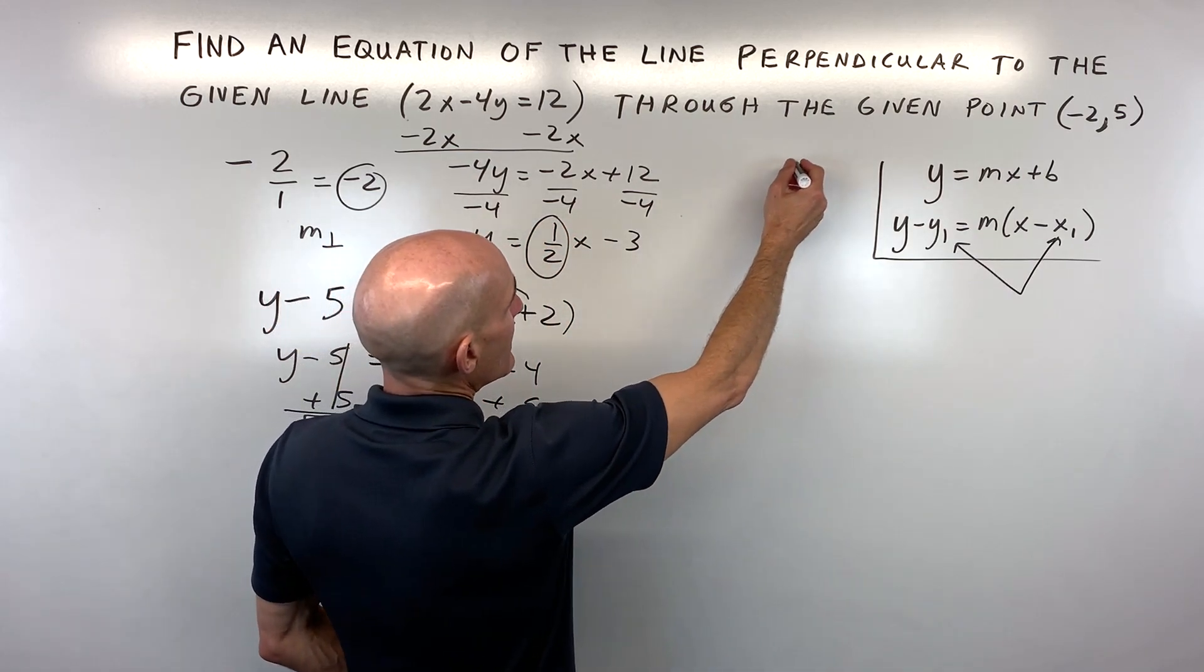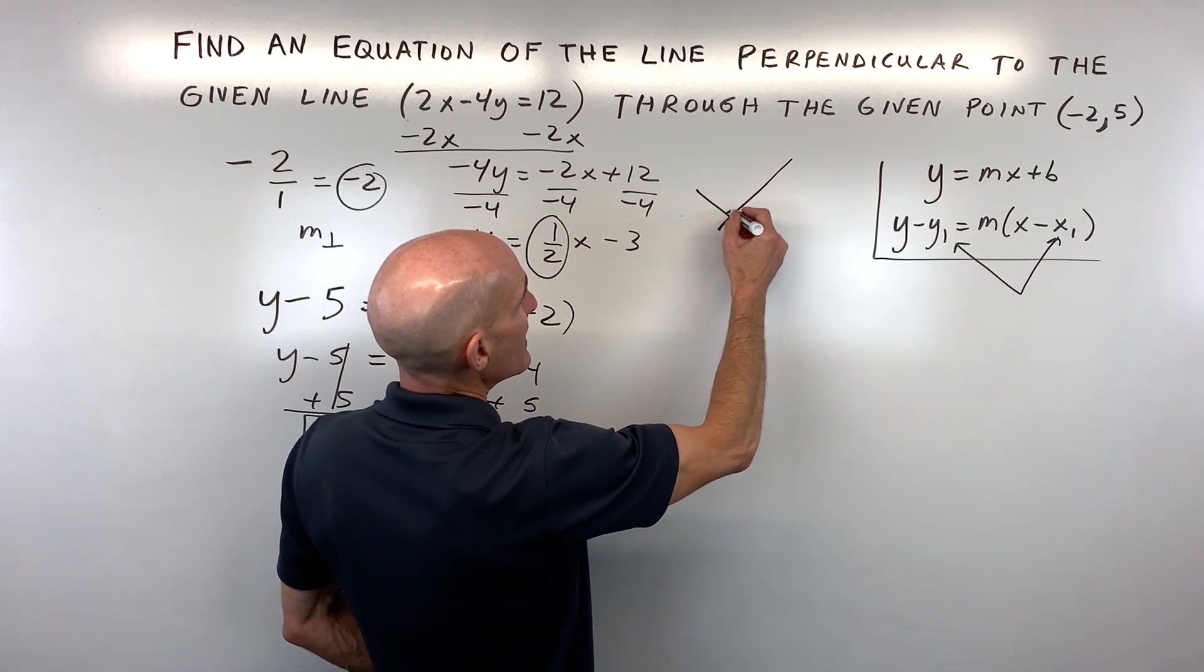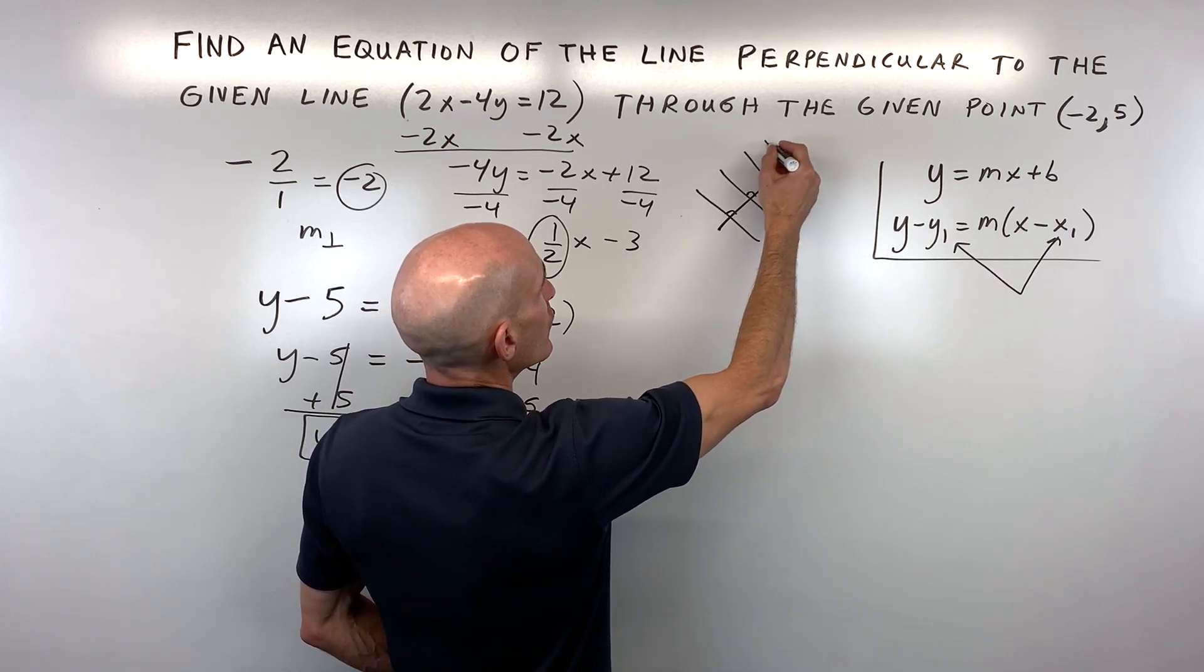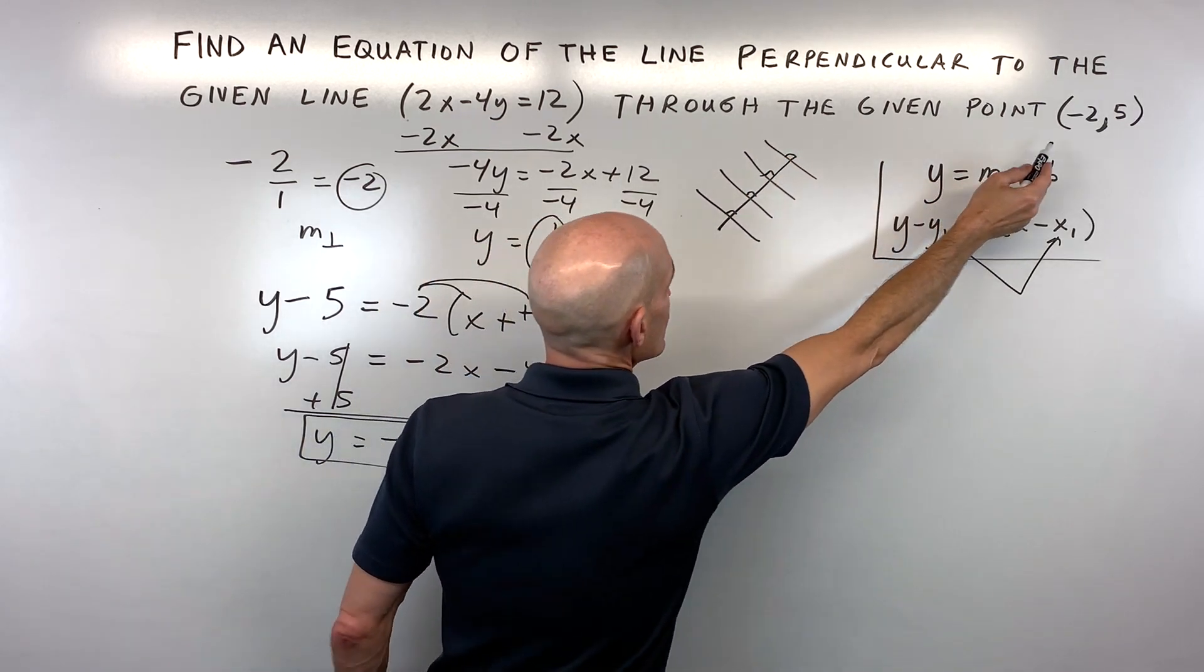Now remember, if I have a line like this, there's actually a lot of lines that are going to be at right angles to that line. But we're looking for the particular one that goes through this point.